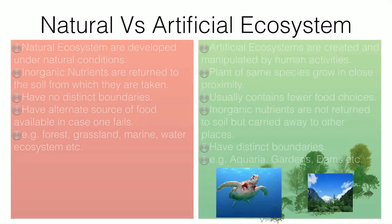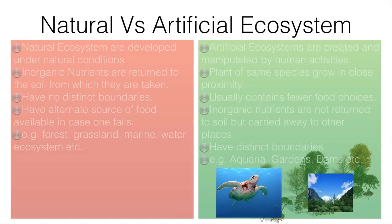Now, natural versus artificial ecosystem. Natural ecosystems are developed under natural conditions, while artificial ecosystems are created by human beings. In natural ecosystems, inorganic nutrients are returned to the soil from which they were taken — when a plant dies, its nutrients go back into the soil. In artificial ecosystems, however, nutrients like fruits and vegetables are taken away from the ecosystem.